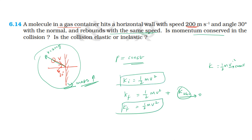The final kinetic energy equals the initial kinetic energy, so kinetic energy is conserved. The momentum of the molecule plus wall system is conserved. The wall has recoil momentum such that the momentum of the wall and the momentum of the outgoing molecule together equal the initial momentum. Since kinetic energy is also conserved, the collision is elastic.